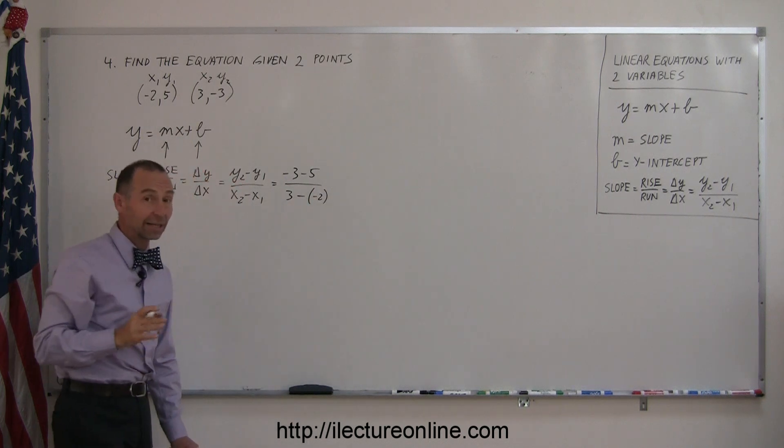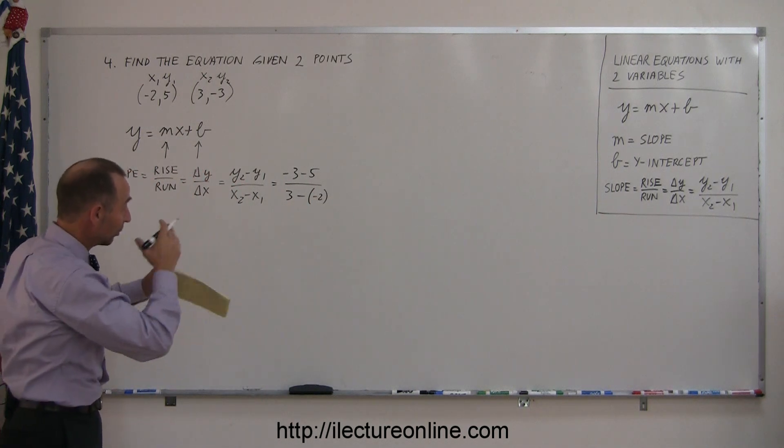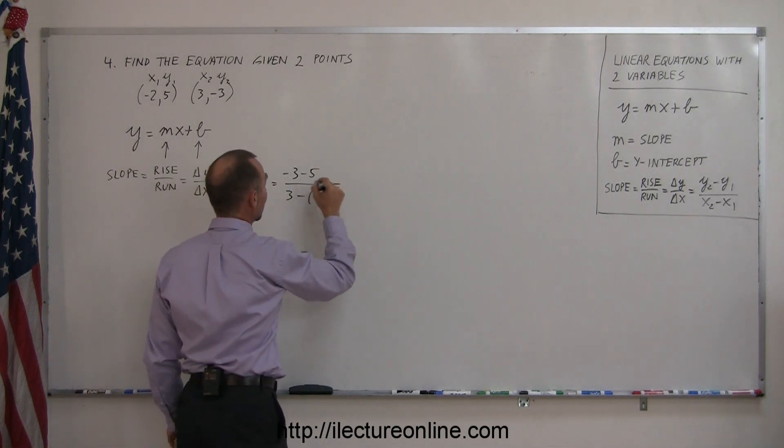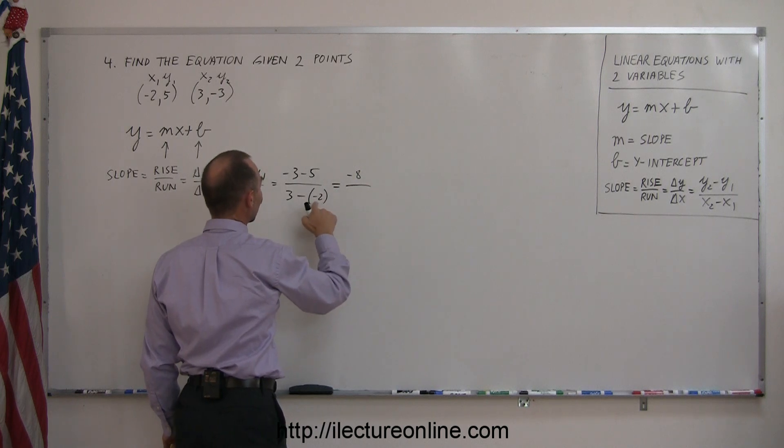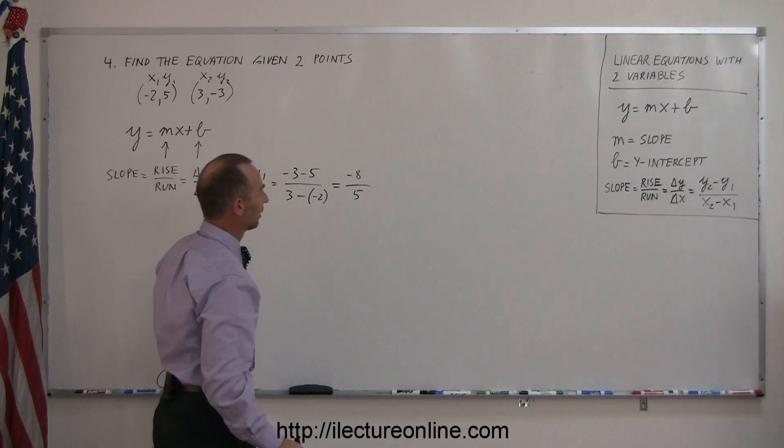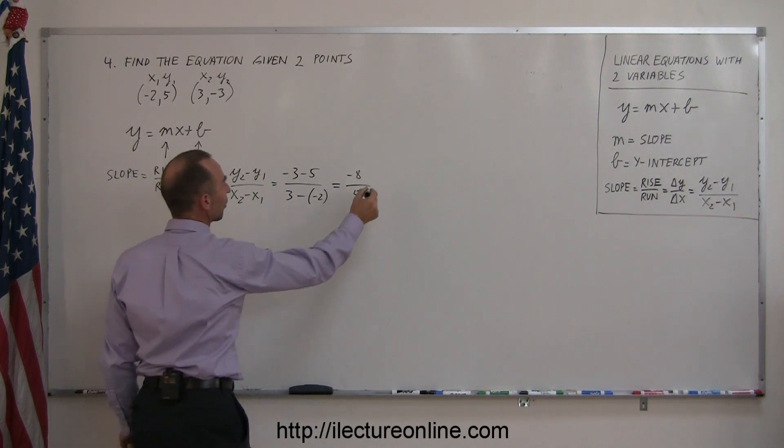If you subtract negative numbers, I suggest you put little parentheses around that. Next, negative 3 minus 5 is negative 8, divided by 3 minus negative 2, which is 5. Negative 8 over 5 is the slope.